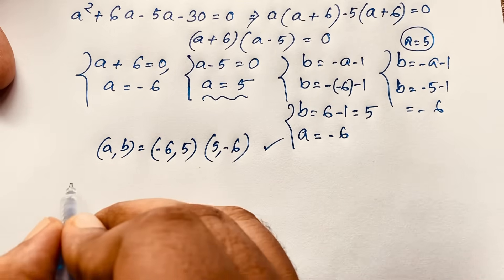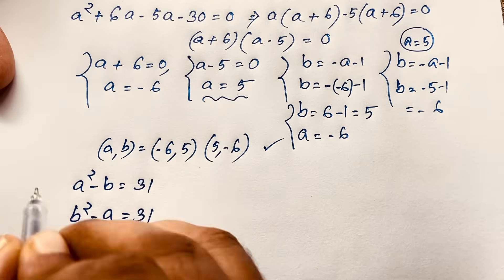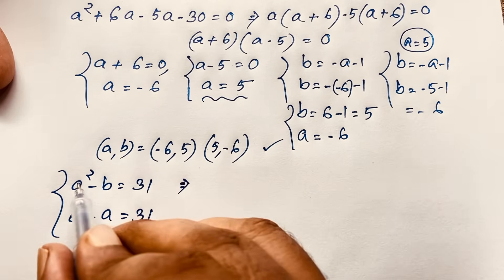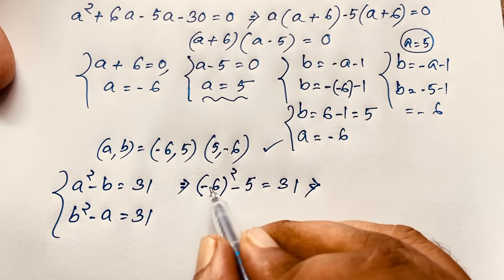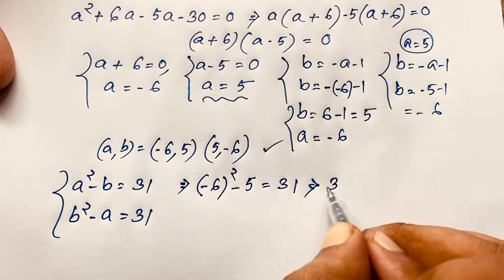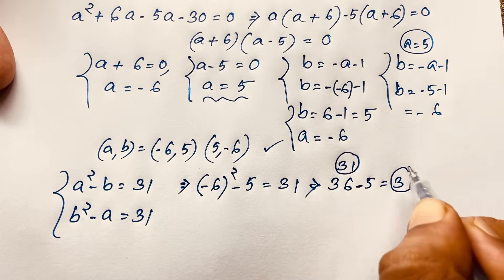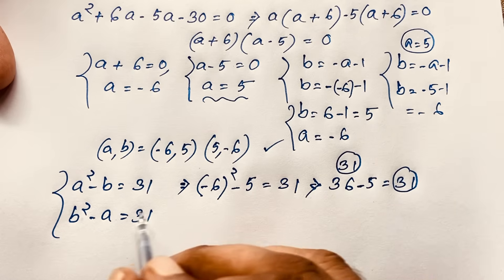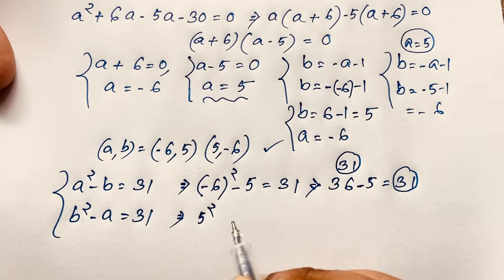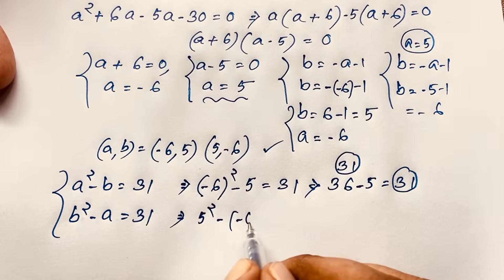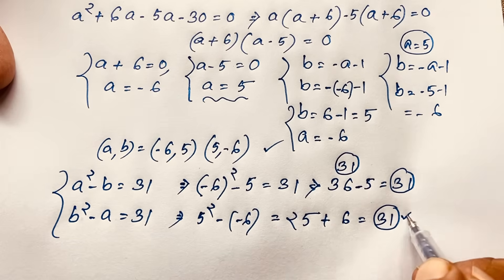Let's verify. Our equations are A squared minus B equals 31 and B squared minus A equals 31. Taking A equals minus 6 and B equals 5: minus 6 squared minus 5 — since the power is an even number it is always positive — so 36 minus 5 equals 31. Left-hand side equals right-hand side. For the second equation: B squared is 5 squared equals 25, minus A is minus of minus 6, so 25 plus 6 equals 31. Both sides are equal.